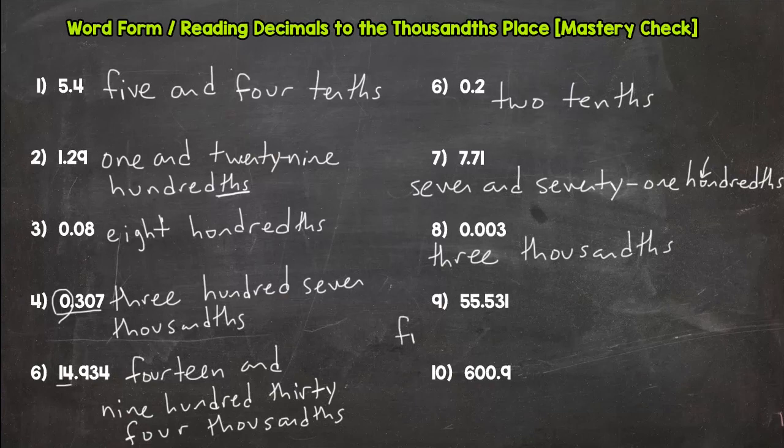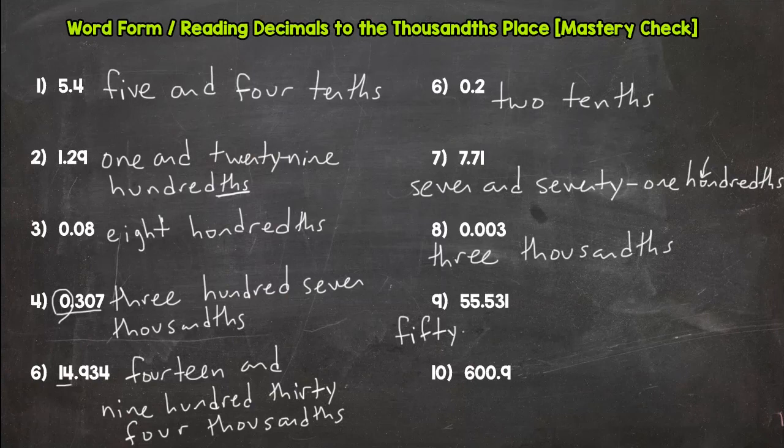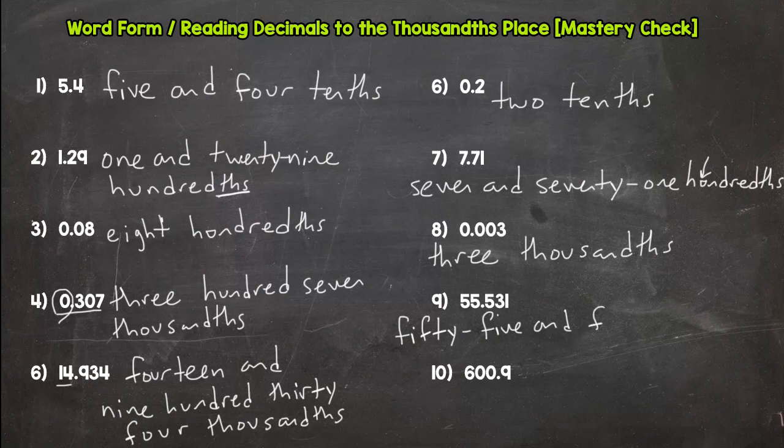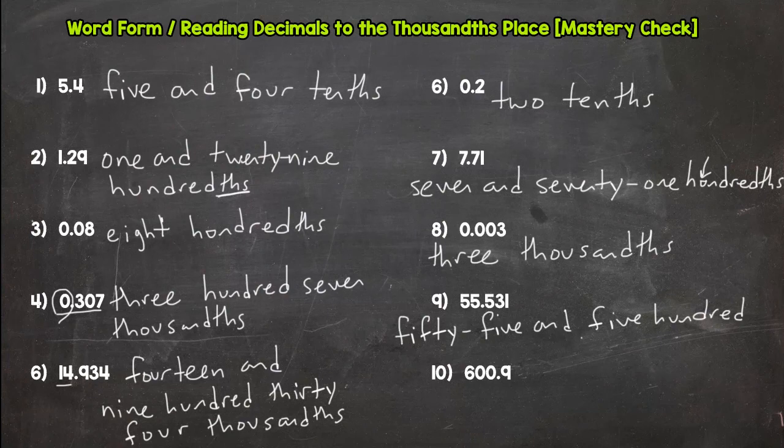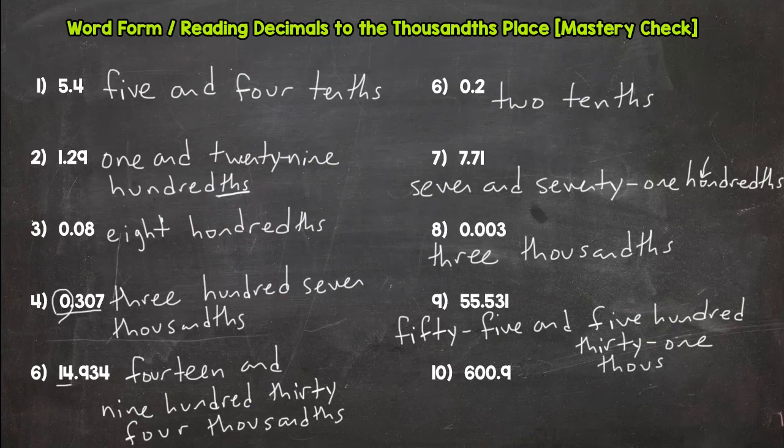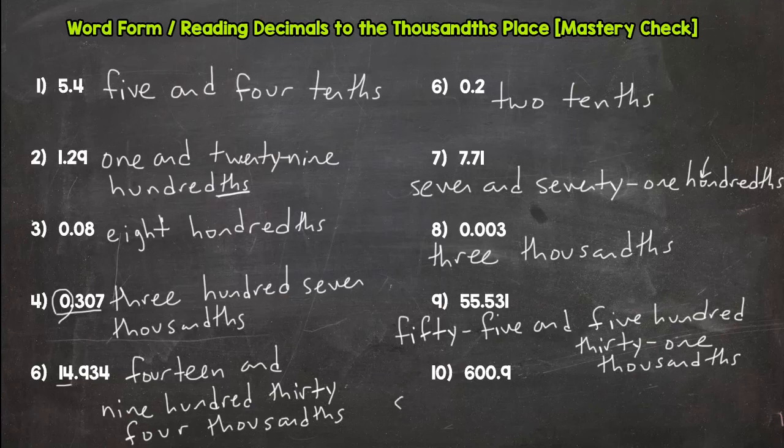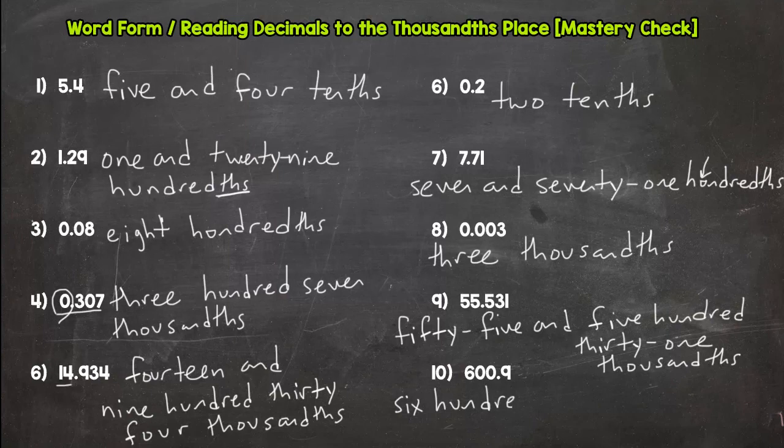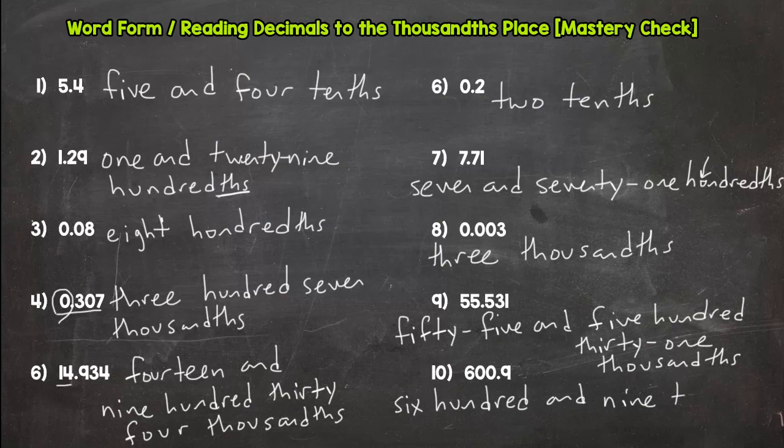Number nine: fifty-five and five hundred thirty-one thousandths. And then finally, number ten: six hundred and nine tenths.